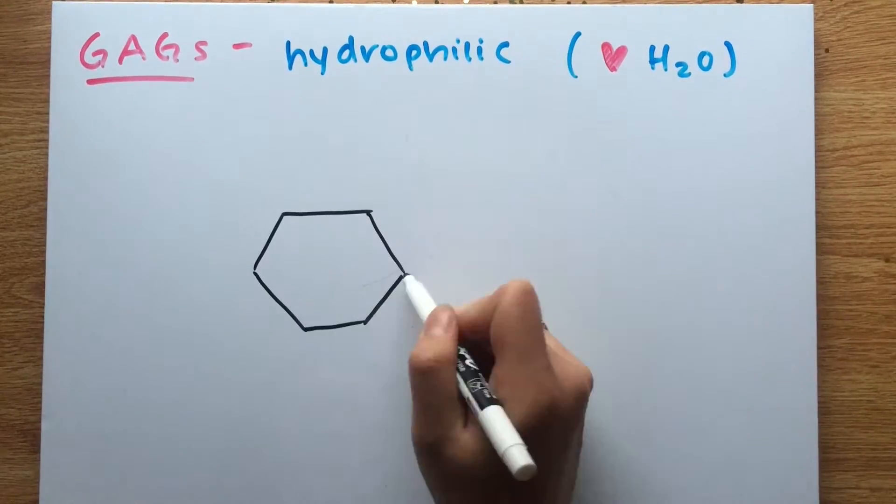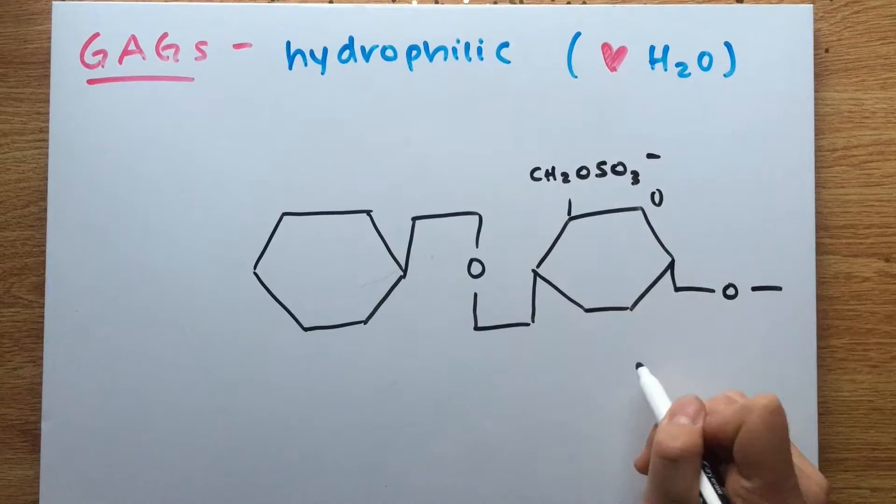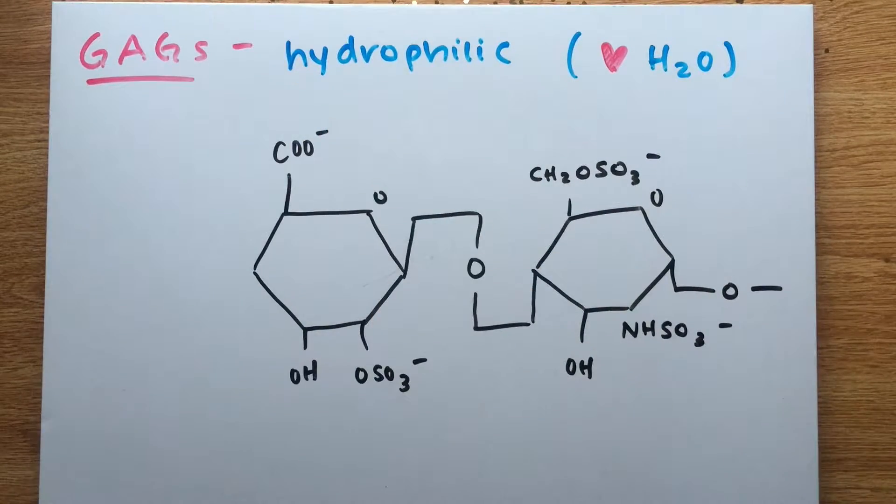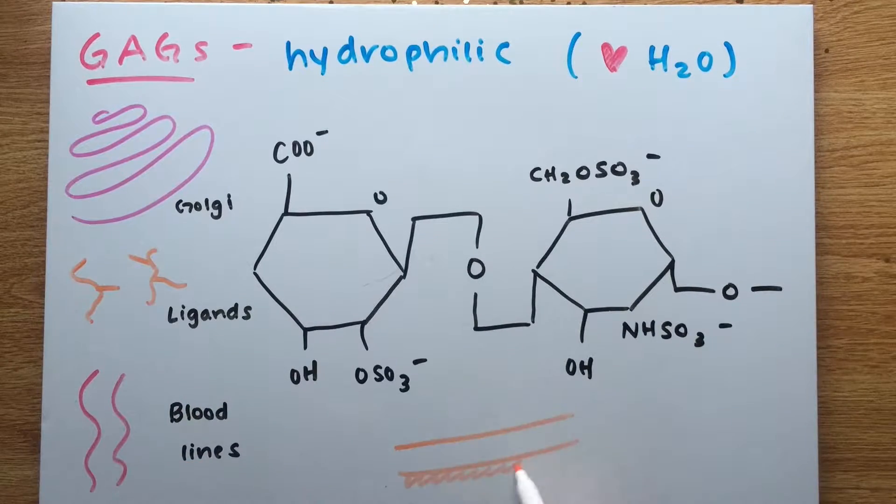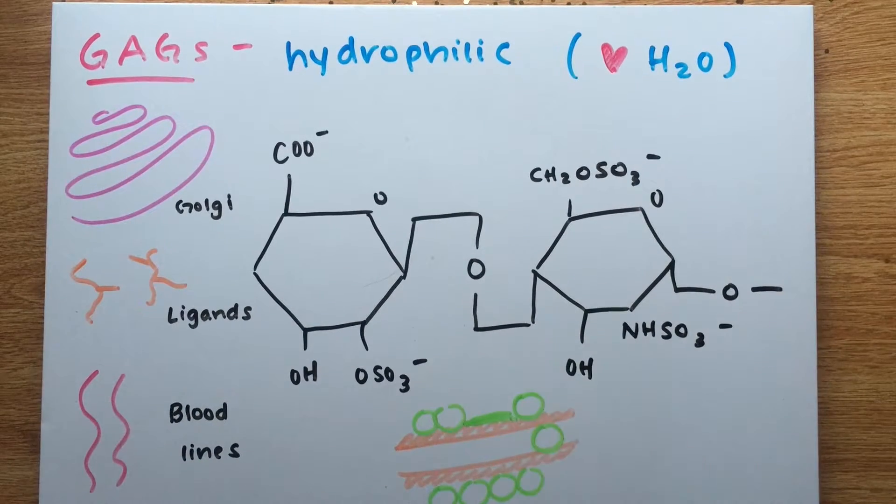Explaining the functions of these two components would be a whole lecture on its own, but long story short, heparin sulfate is a linear polysaccharide synthesized in the Golgi apparatus. It binds to protein ligands and regulates things like blood coagulation and tumor metastasis.